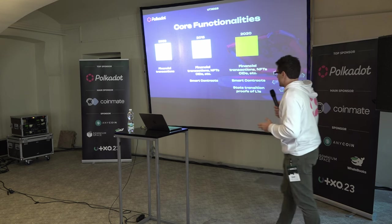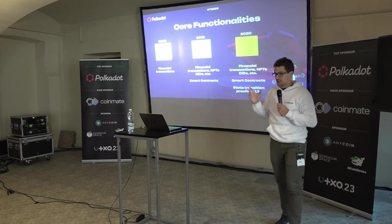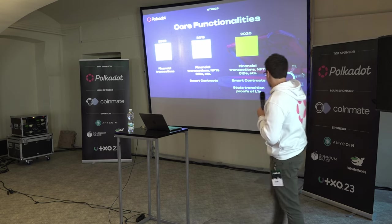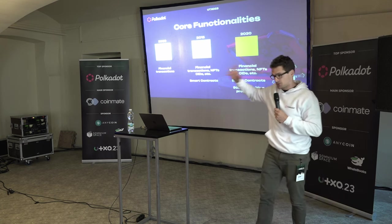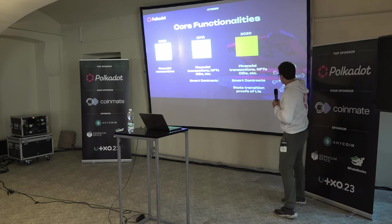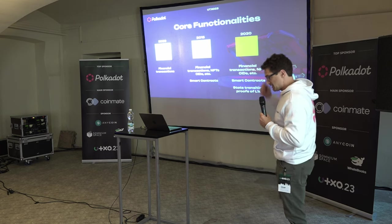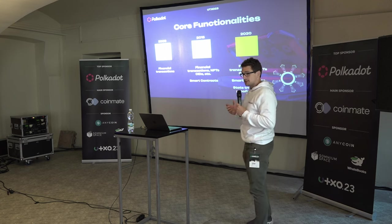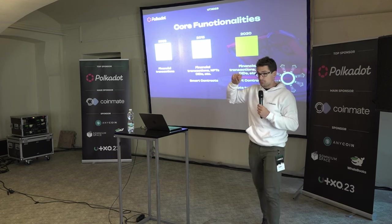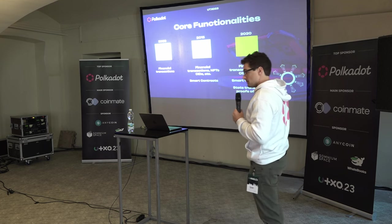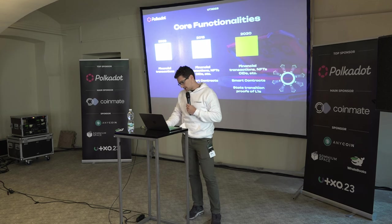Here you can see the architecture of Polkadot. We have a relay chain — the ring — which is the Polkadot relay chain, the layer zero, providing security. All the other things attached are layer ones — these are real blockchains, like Bitcoin, like Ethereum. What we store on the relay chain blocks are transition proofs of those chains. This allows us to have shared security in the system, which is a huge thing in a multi-chain environment.